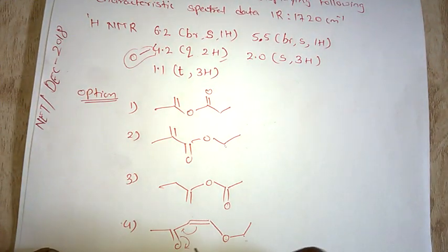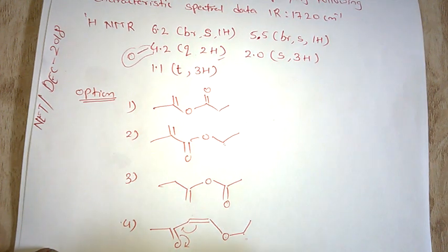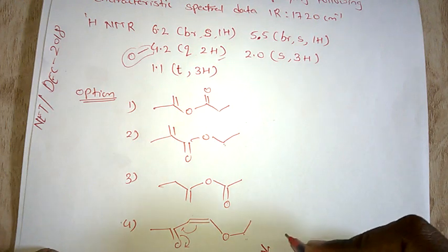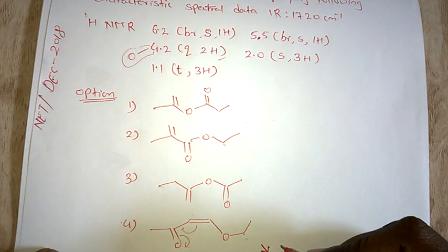This is in conjugation. The ketone range for IR is 1705 to 1720, but in conjugation it will decrease. Due to conjugation, it will decrease the IR value.